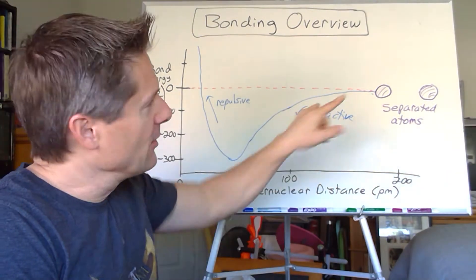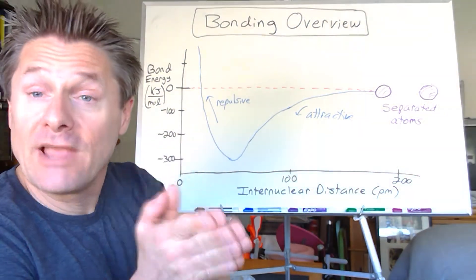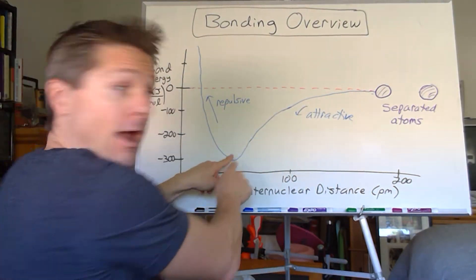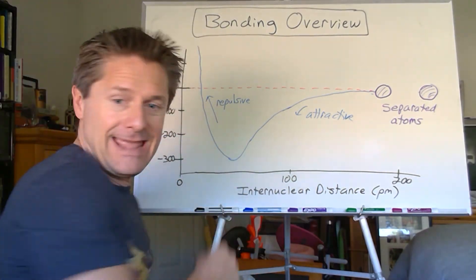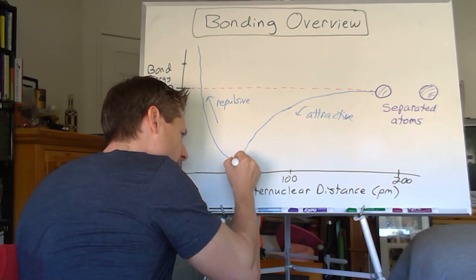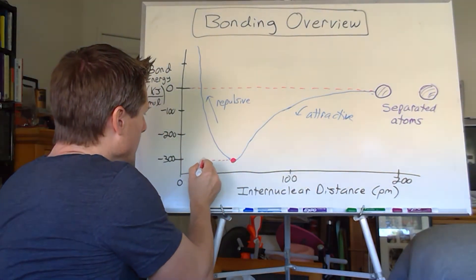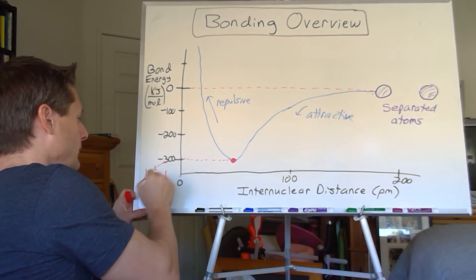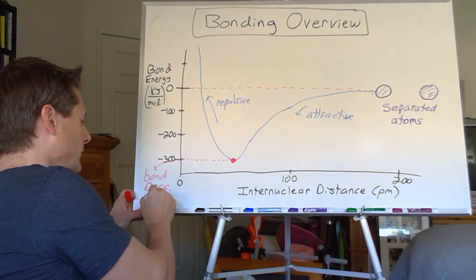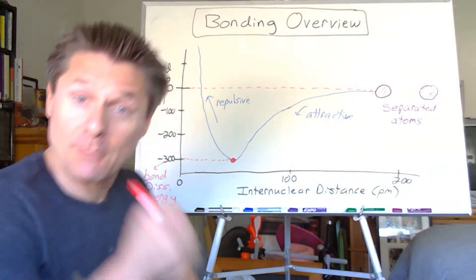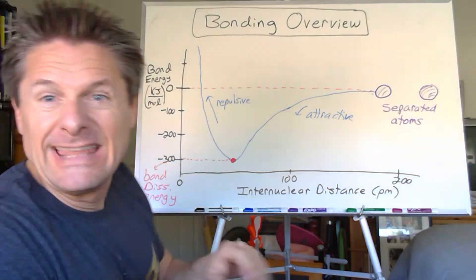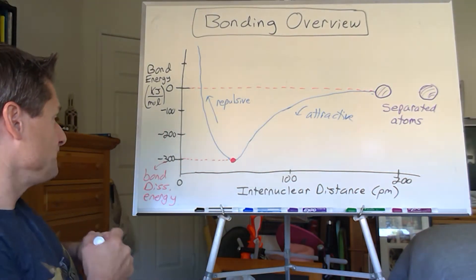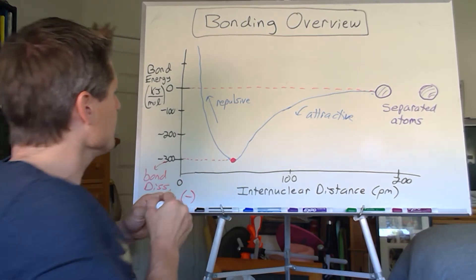If you look at this curve and you're these two atoms wanting to go to the lowest energy state, where would you want to be? The lowest point on the curve - if you rolled a ball, it would go right there. That is your lowest energy state, and that's called your bond dissociation energy - or rather the negative of the bond dissociation energy, since bond dissociation energies are defined as positive values.